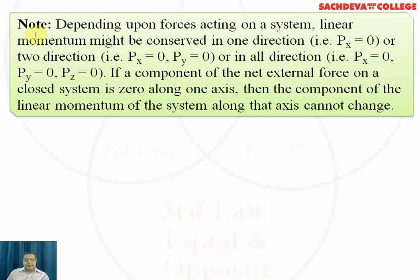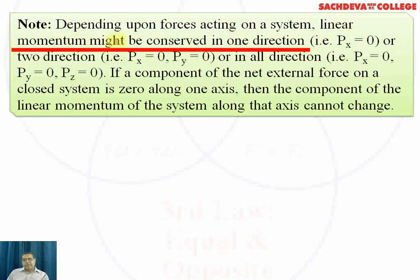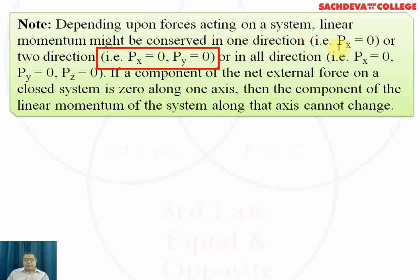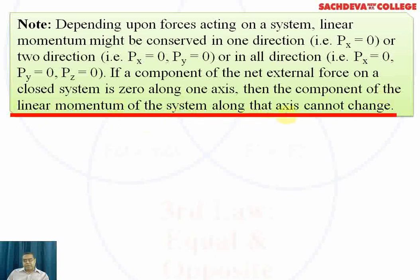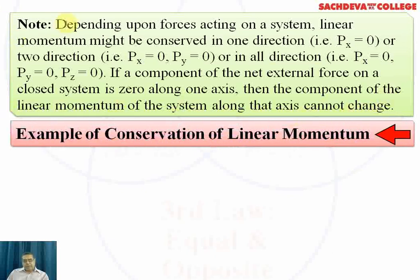An important note: depending upon the forces acting on the system, linear momentum may be conserved in one or more directions. If px is zero, py is zero, and pz is zero, then the total momentum px + py + pz is zero. If the net external force on a closed system is zero along one axis, the component of linear momentum along that axis cannot change.